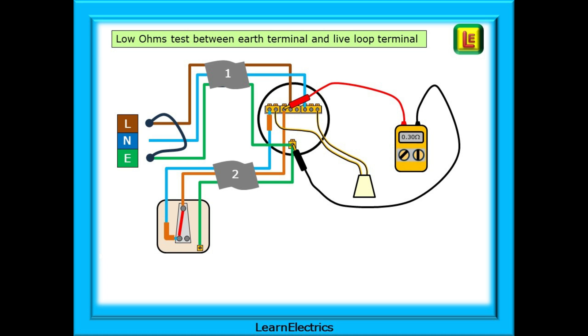The low ohms test will be between the live loop terminal in the ceiling rows and the earth stud in the ceiling rows. We'll be testing the resistance of cable number 1, and if the meter shows a satisfactory and low enough resistance reading we can say that continuity has been proved. But what is a low enough reading?